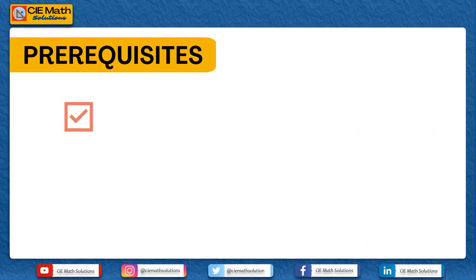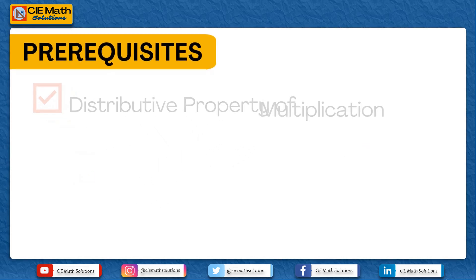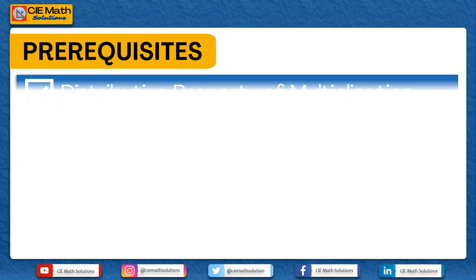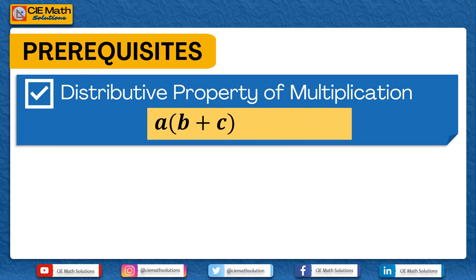The second concept needed is the distributive property of multiplication. If a is multiplied to b plus c, where a, b, and c could be any terms, the product is given by a times b plus a times c.